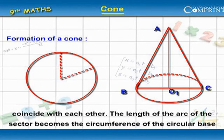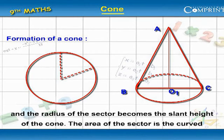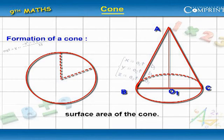The length of the arc of the sector becomes the circumference of the circular base and the radius of the sector becomes the slant height of the cone. The area of the sector is the curved surface area of the cone.